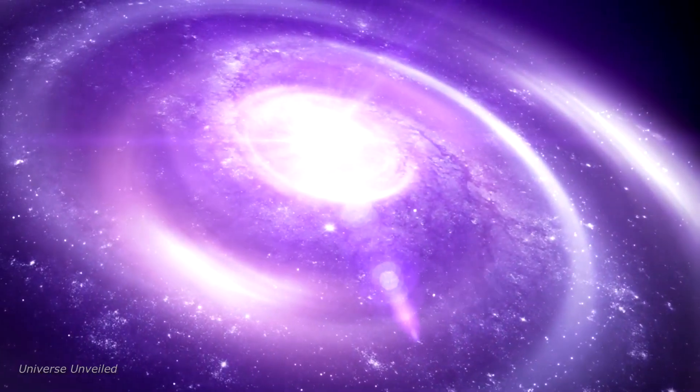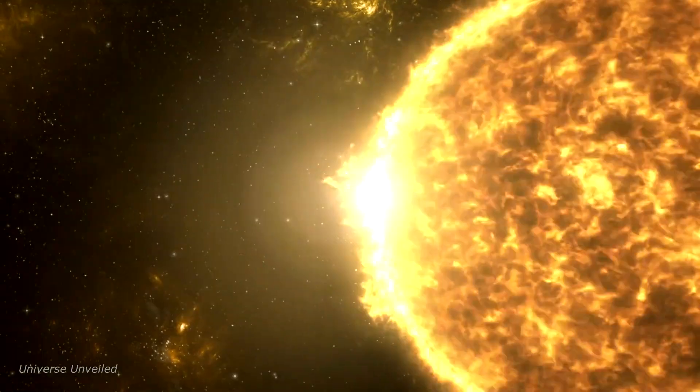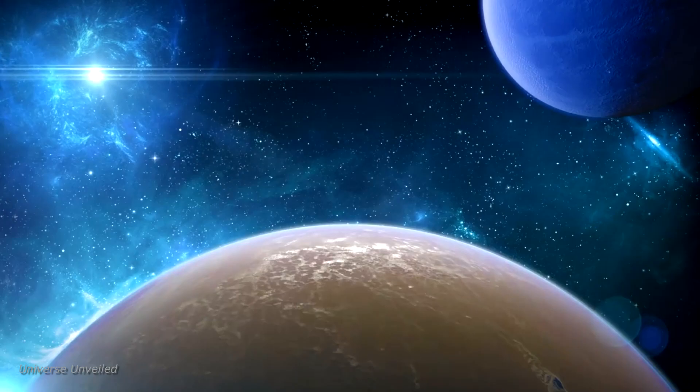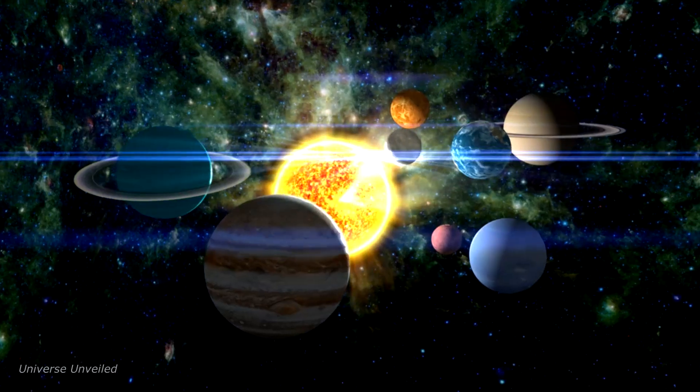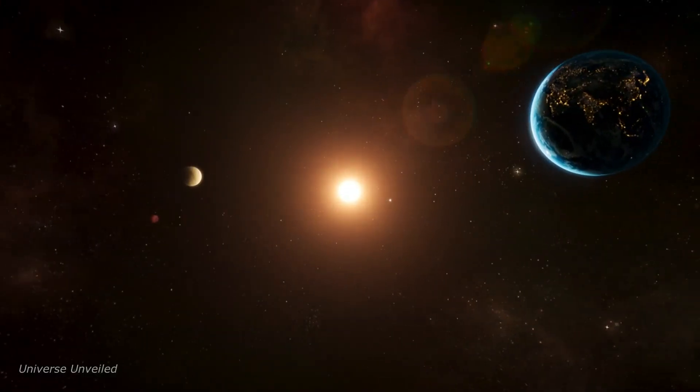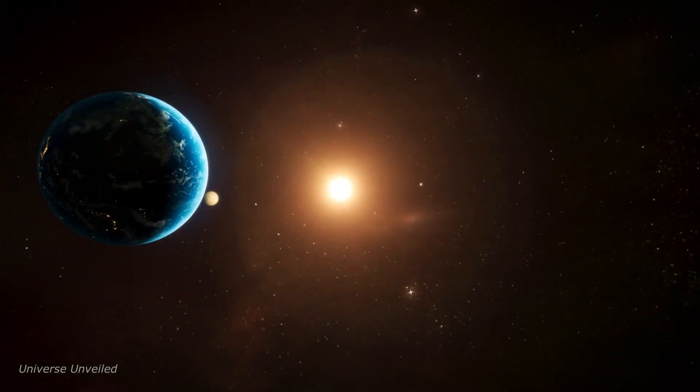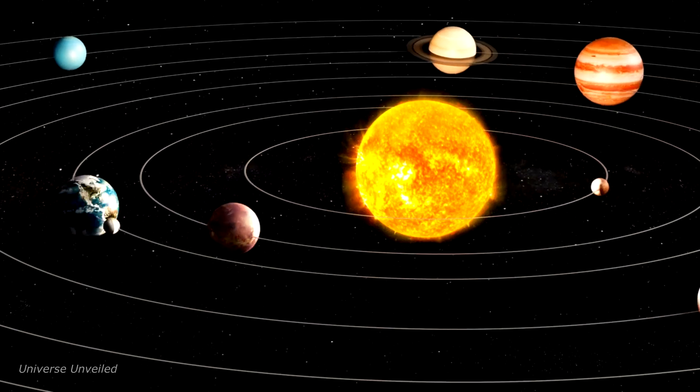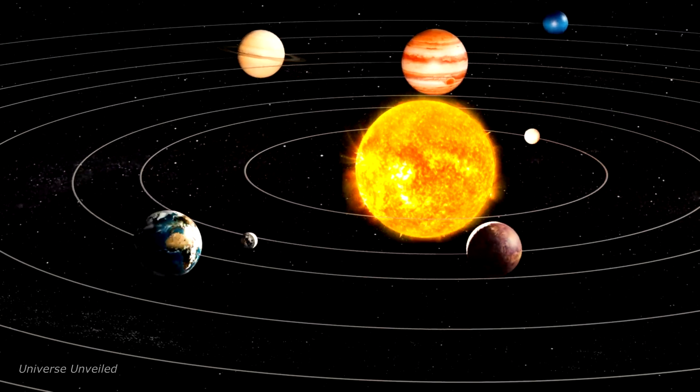Our solar system, a cosmic oasis in the vast universe, is home to a myriad of celestial bodies, each with its own unique characteristics and mysteries. At the heart of it all, basking us in warmth and light, is the Sun, our star, around which eight diverse planets revolve.